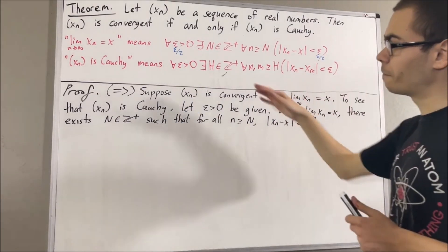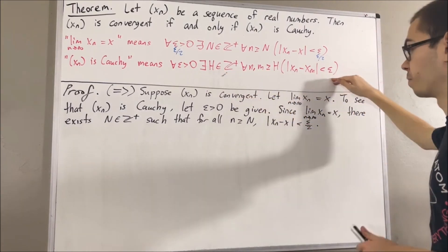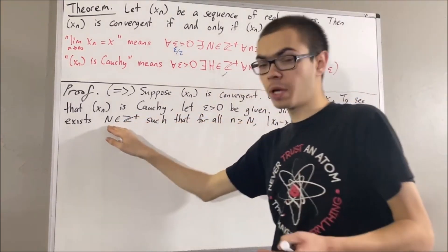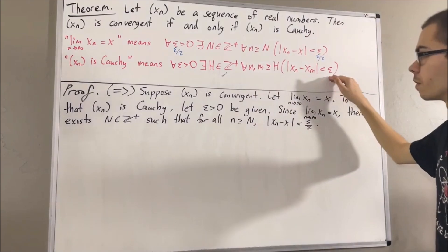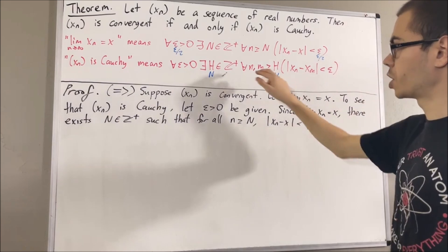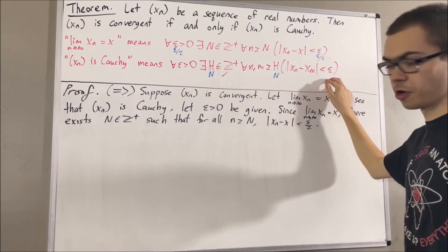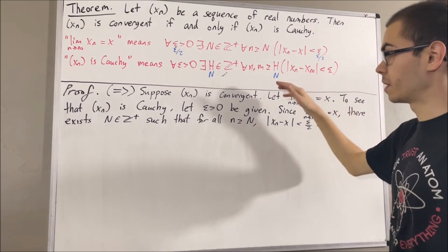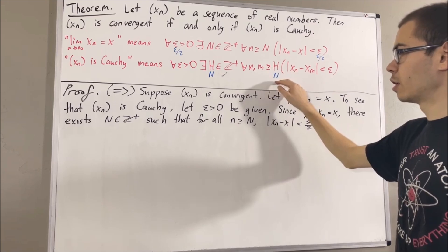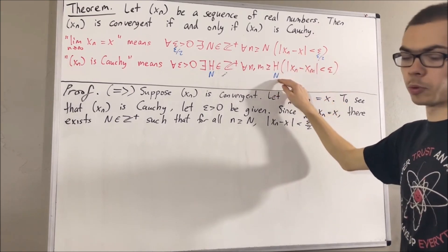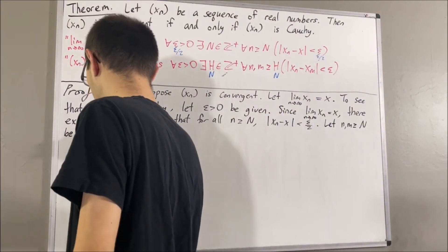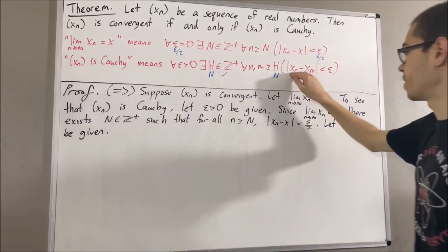Remember, we want to find a positive integer H such that this is true. The claim is that if we take H to be capital N, then this will be true. So let's take H to be capital N, and from here we want to show that this statement is true. And since we're trying to prove a statement about every two integers n and m greater than or equal to capital N, let's give ourselves two arbitrary integers greater than or equal to capital N — I'll call them n and m.